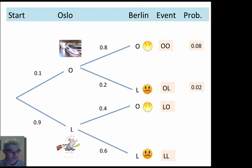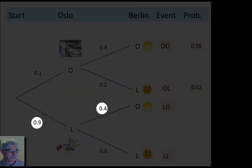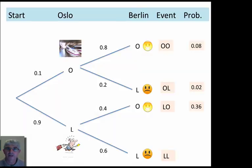Next one down, the next event, was late to Gardermoen, on time to Berlin. The late branch to Oslo, probability 0.9 times the on time one to Berlin, 0.4, 0.9 times 0.4, 0.36.